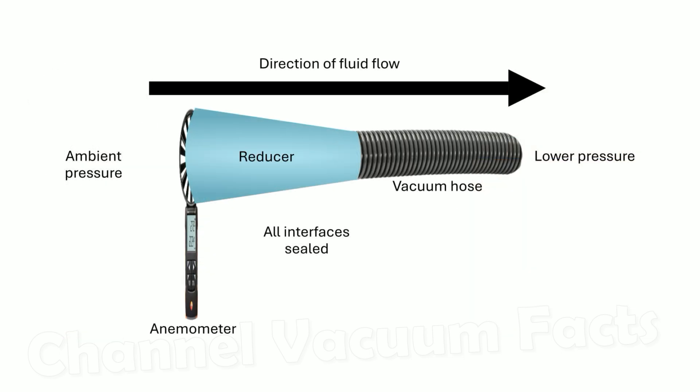This is the typical setup shown where measurements are taken from an open hose. The flow direction is from a quiescent atmosphere into the anemometer, through a conical reducer, and into the narrower tube of the vacuum cleaner hose at lower pressure.